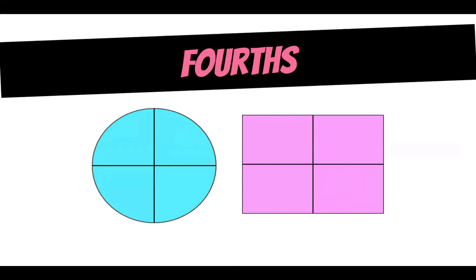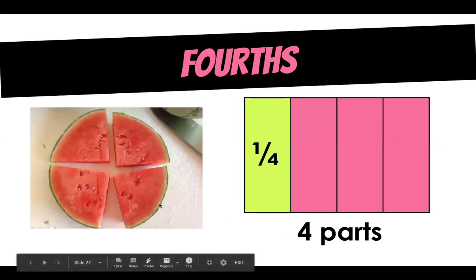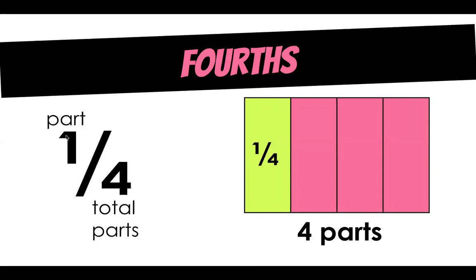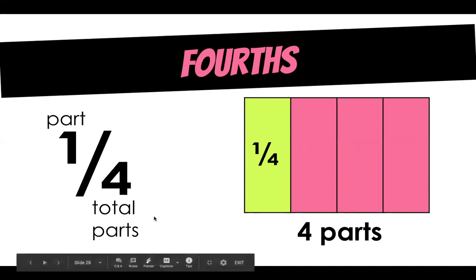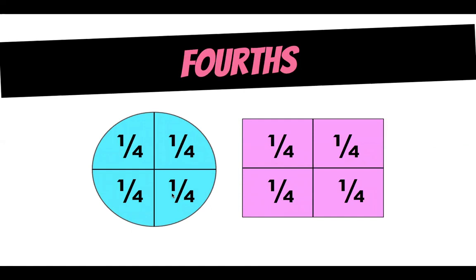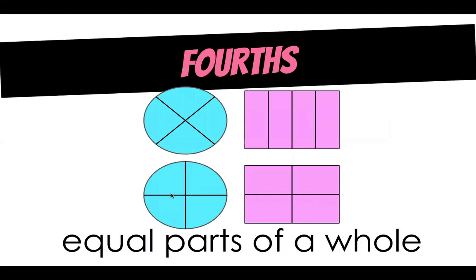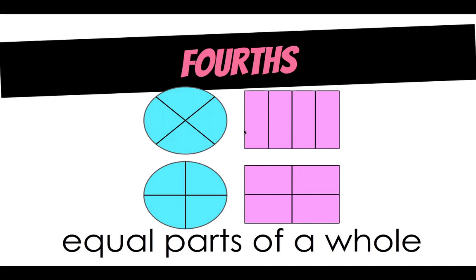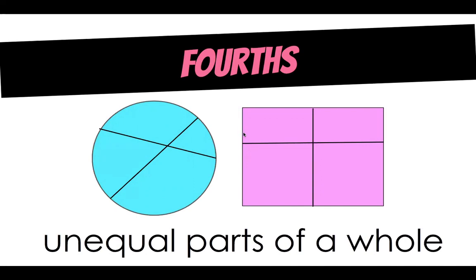Fourths is our final fraction for second grade. How many parts is this circle and this quadrilateral broken into? Four parts, just like this piece of watermelon. We have one part out of four — one fourth, one fourth, one fourth, and one fourth — showing that we have one out of four total parts. Equal parts of a whole don't always look the same way. We can split in different directions and still have equal parts. It's when they are unequal parts of a whole that they are not fourths.